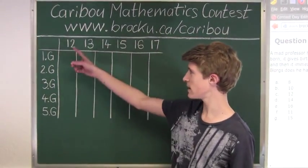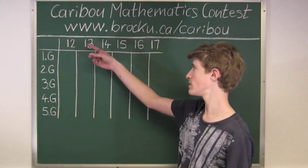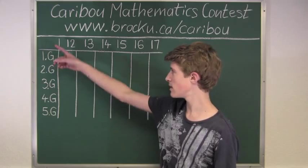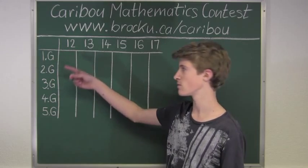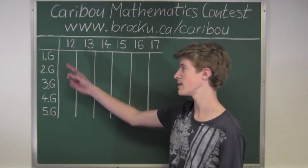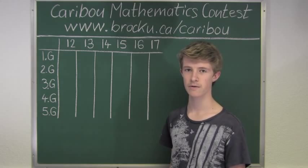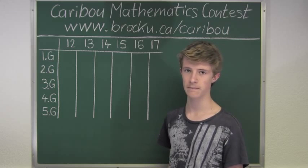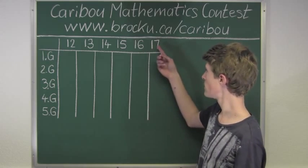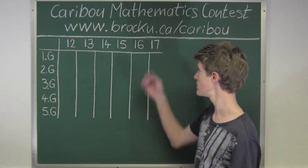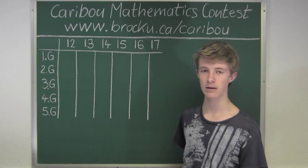The numbers at the top of this table represent the times — 12 for noon, then 13 for 1 p.m., 2 p.m., and so on. The numbers at the left side of the table represent the generations of Blorbs: the first generation, second generation, and so on. We want to know the number of living Blorbs at 4:30 p.m., which is after 4 p.m. and before 5 p.m. So we draw a line in between the 16 and the 17, between 4 and 5.